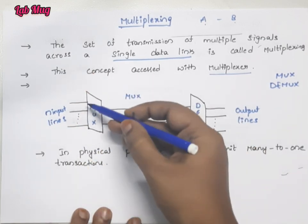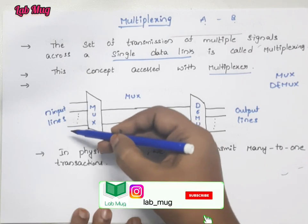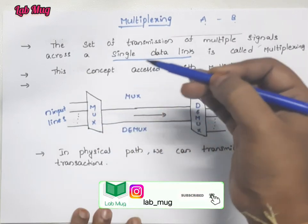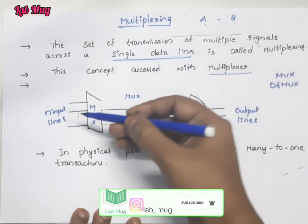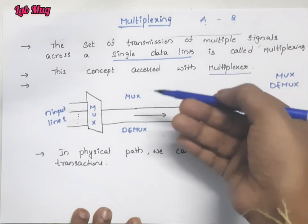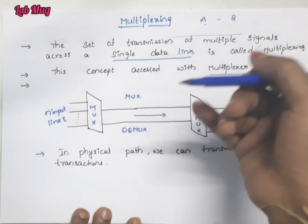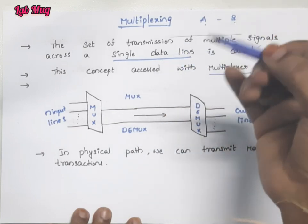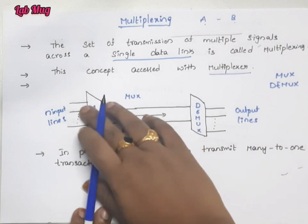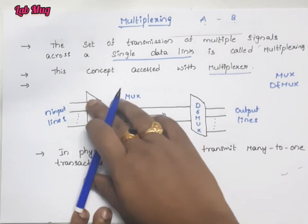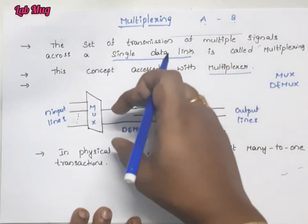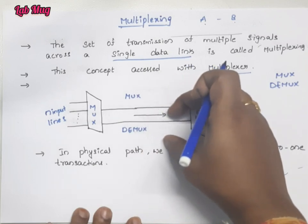So here we have multiple senders — sender 1, sender 2, and so on up to n senders. All these senders feed into a multiplexer, and the multiplexer combines all their signals and transfers the data over one single medium.